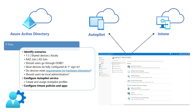Once all of these questions have been answered, you can then begin the process of configuring both Windows Autopilot and Microsoft Intune to align with your desired requirements in order to get these devices ready for productive use. All of the Intune and Autopilot configurations are to be done from the Microsoft Endpoint Manager console, which will in turn interact with both the Windows Autopilot and Microsoft Intune cloud services to enable the appropriate configurations based on what you've configured in the portal.